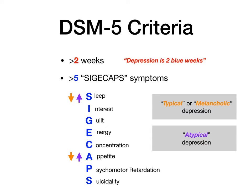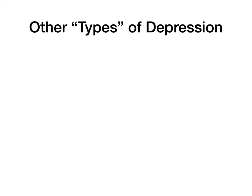To summarize the DSM-5 criteria: 'two blue weeks' — at least five SIG-E CAPS symptoms for at least two weeks. That's major depressive disorder. Now, there are other depressive illnesses that often get lumped in with MDD but aren't actually MDD per se.